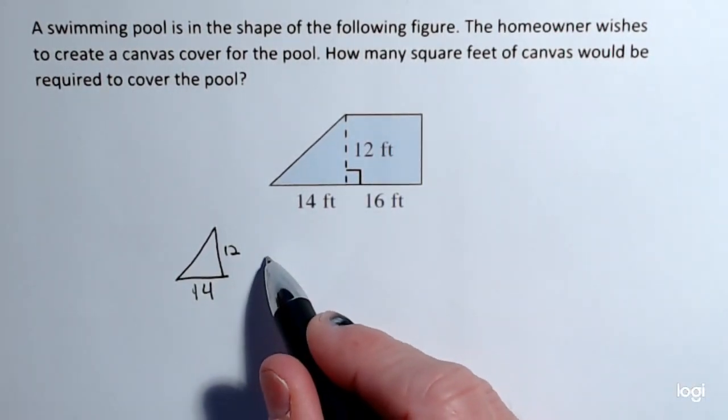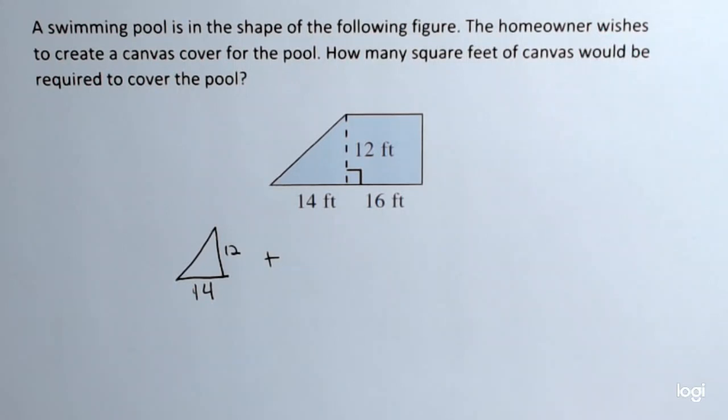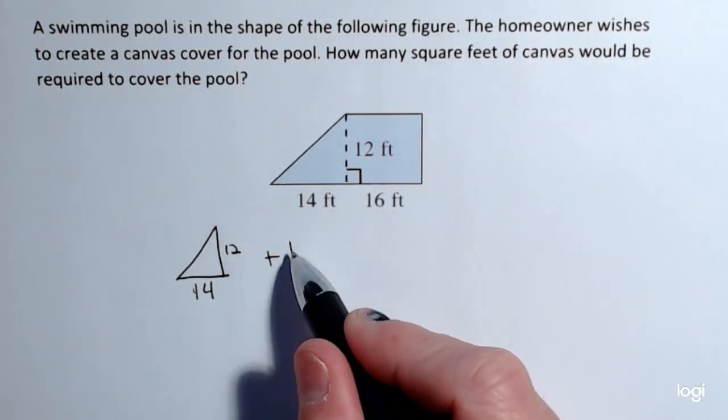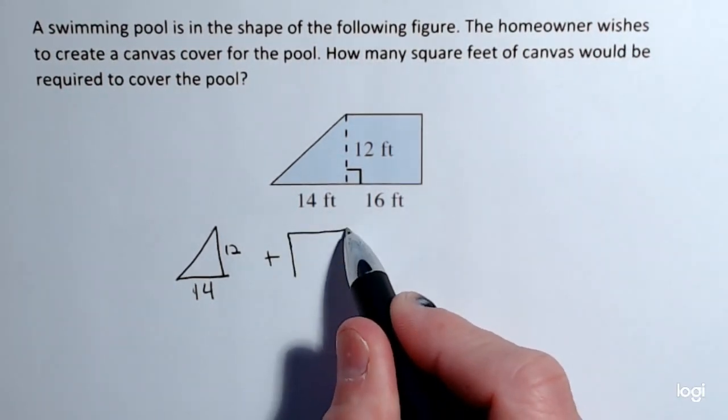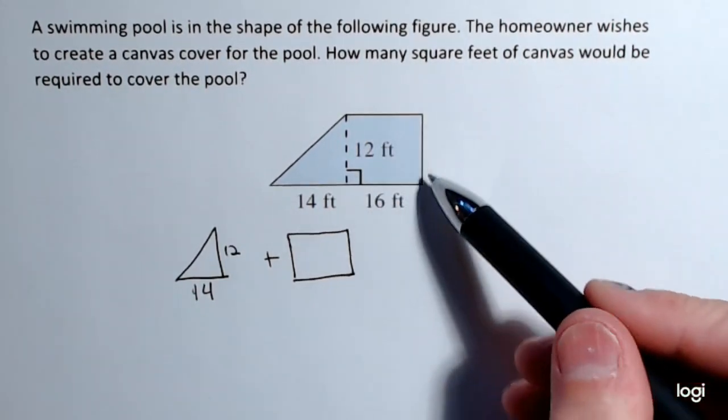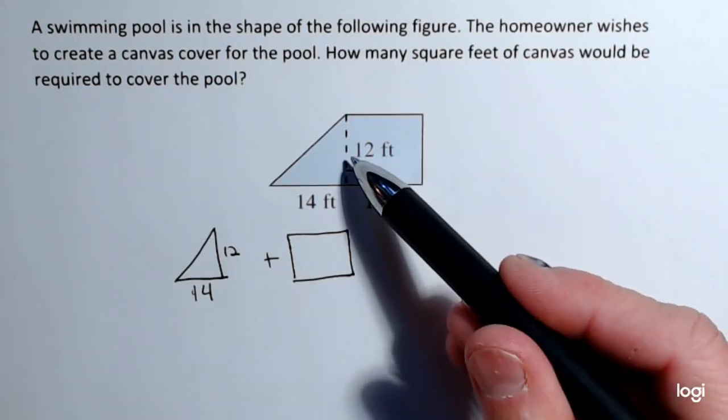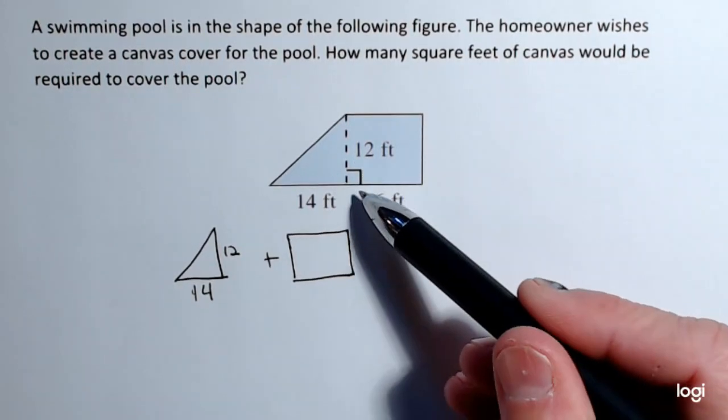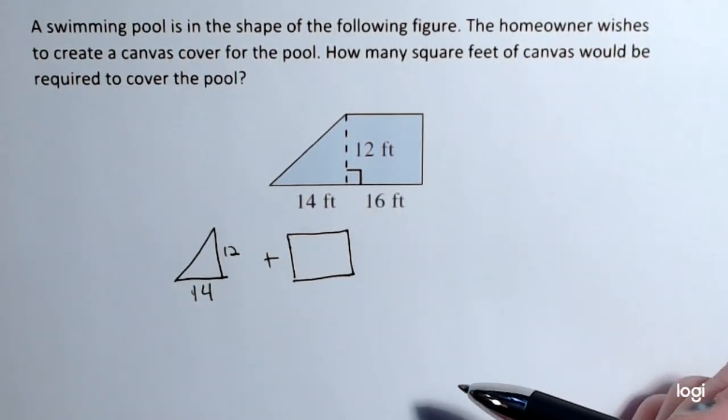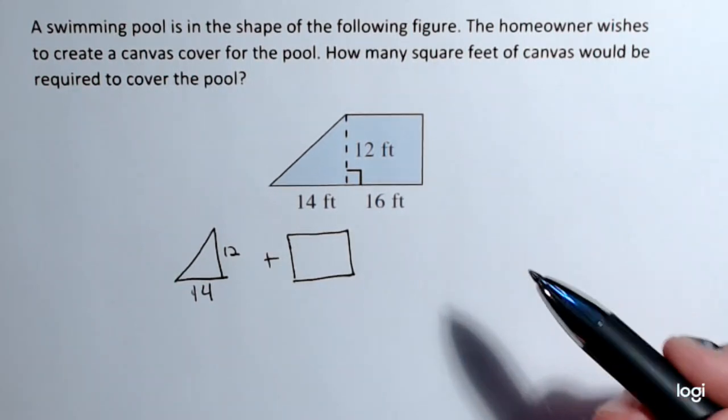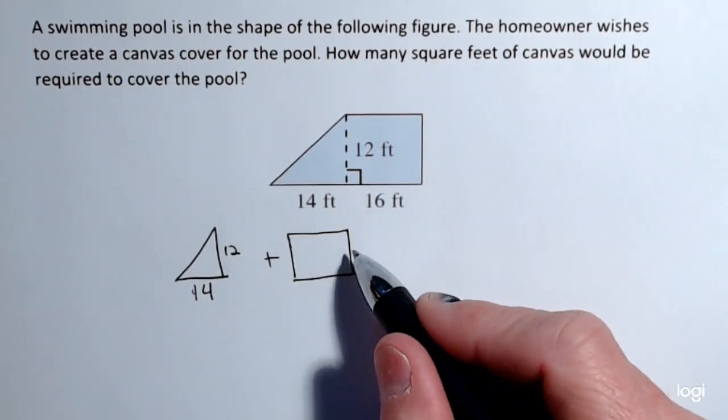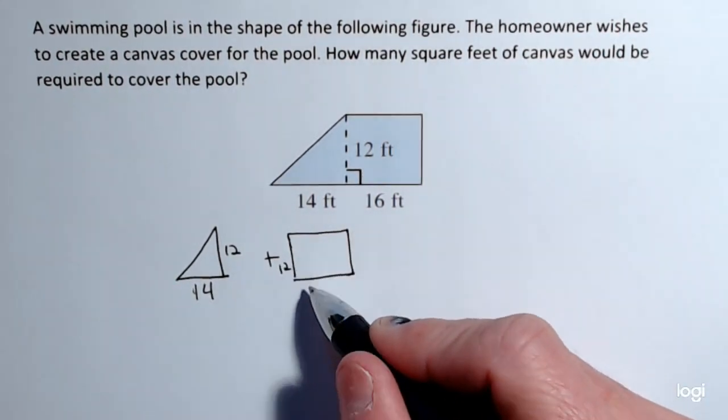So I want to find this area in feet squared and add it to the area of this rectangle. Now the picture looks like this is a square, but because the height is not the same as this base here, it's a rectangle rather than a square. So this will be 12, this will be 16.